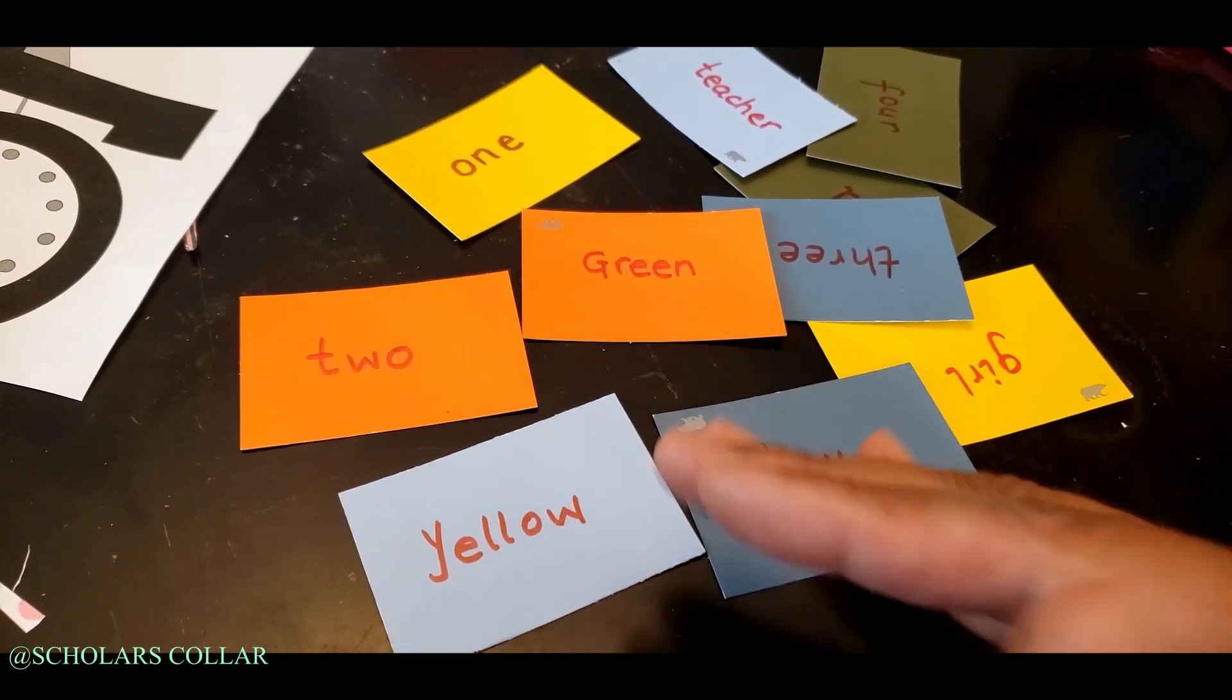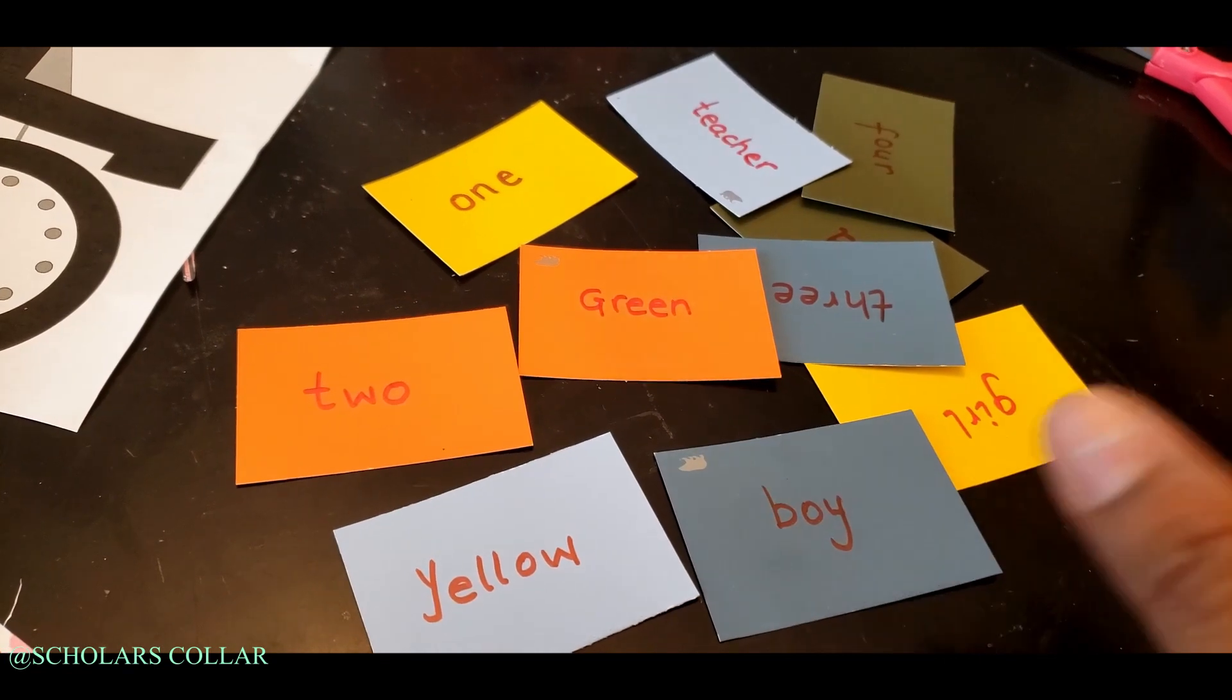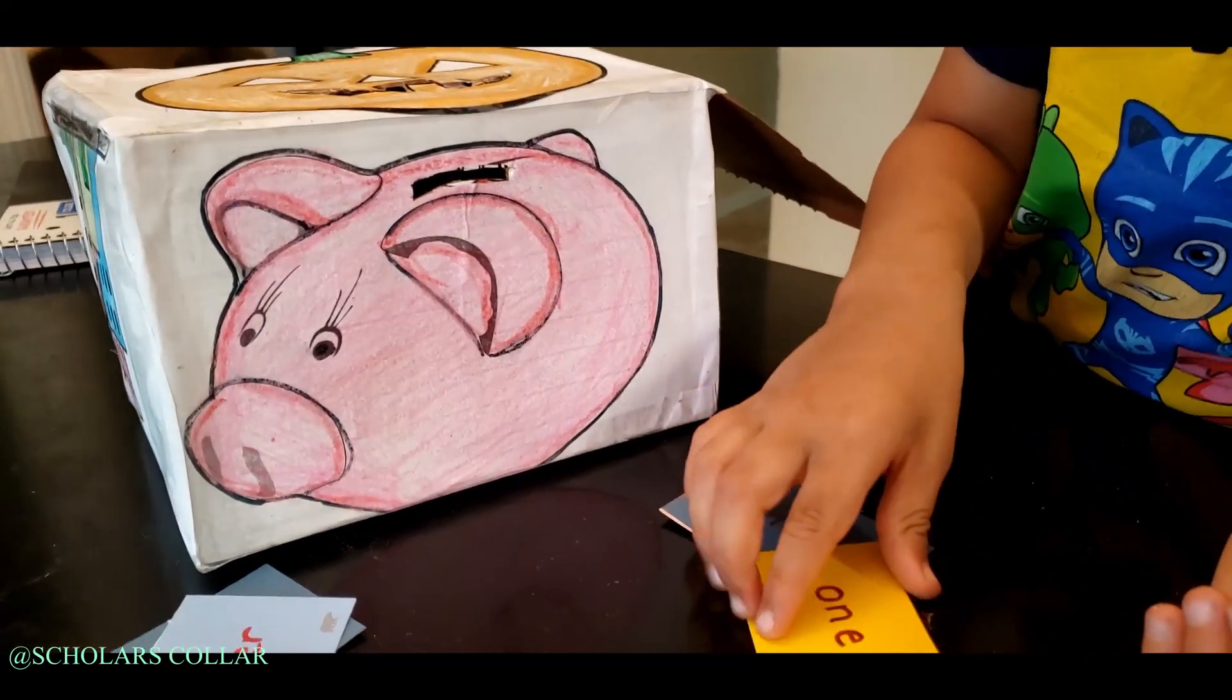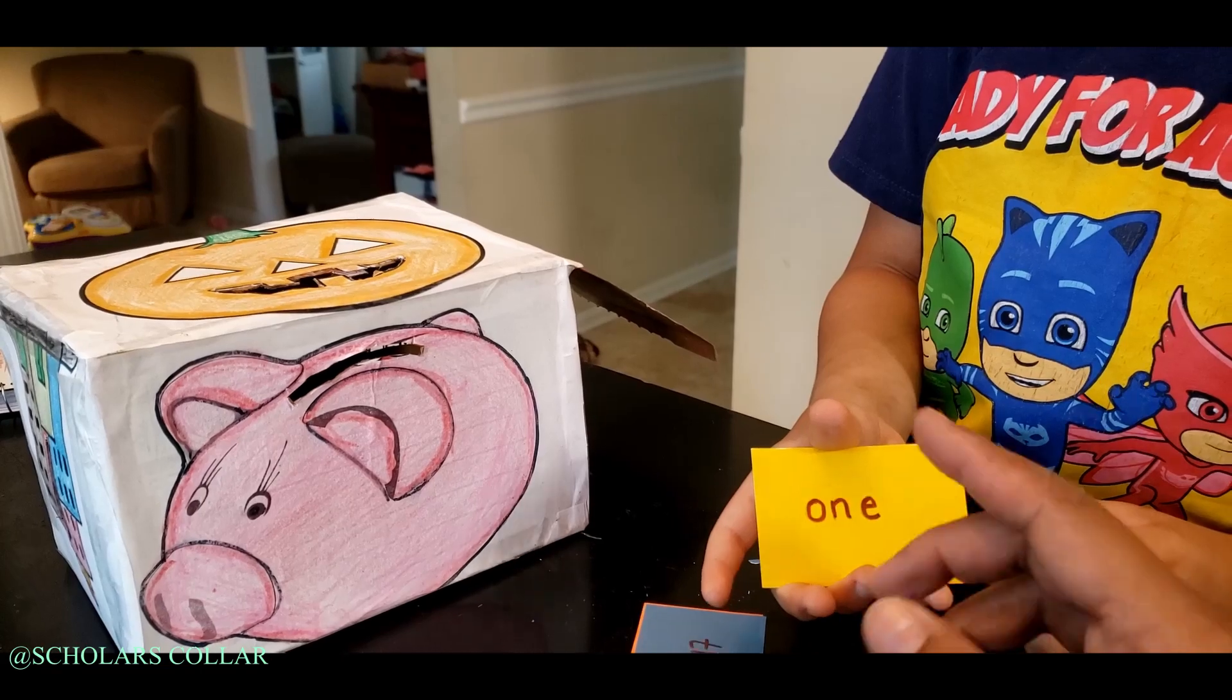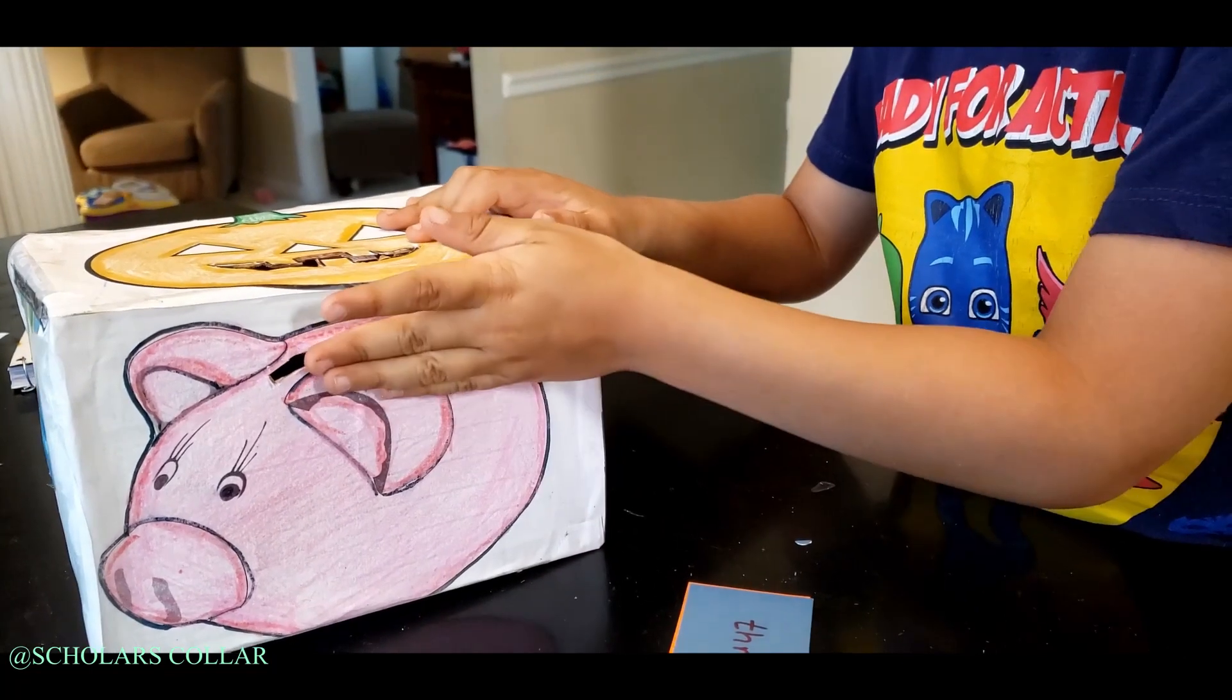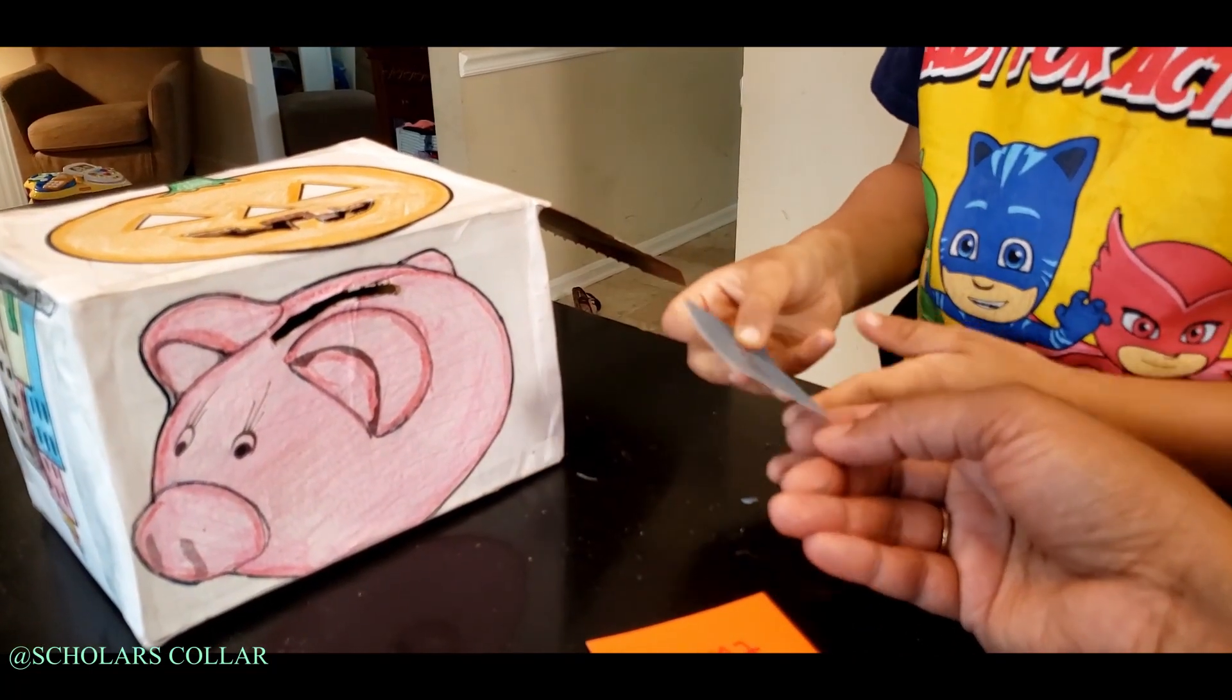I have number names and color names. I also have 'boy,' 'girl,' and 'teacher'—those are people names. Here I'm introducing sight words that are number names into the piggy bank. A little more creativity would be to make circles out of these cards because then it looks like you're introducing coins into the piggy bank.